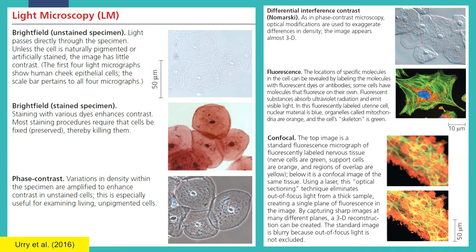These are examples of specimens viewed under different types of microscopes. For light microscopes, we can see unstained specimens or, with the help of stains and dyes, enhance our view. These are human cheek epithelial cells without stain, and with dyes this is how they look — which is what we can do in our laboratory. Phase contrast microscopy shows variations in density within the specimen, allowing us to see more structures of living unpigmented cells.